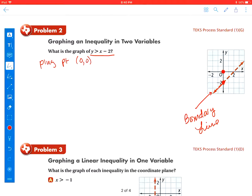So I'm going to plug in the coordinate point (0, 0). My y value is 0 greater than x is 0 minus 2. So 0 minus 2 is minus 2. 0 is greater than minus 2. This is true.